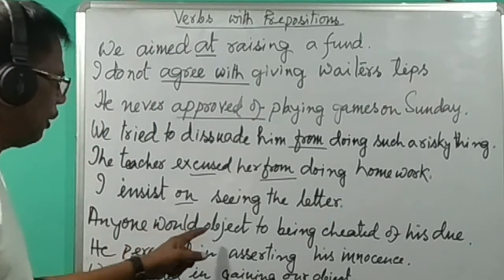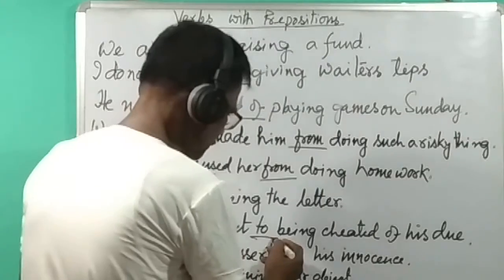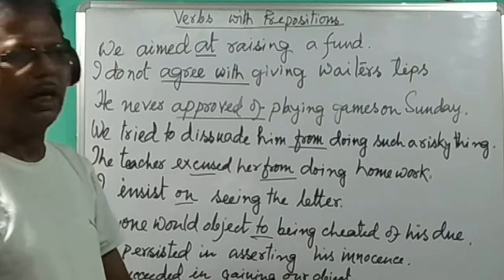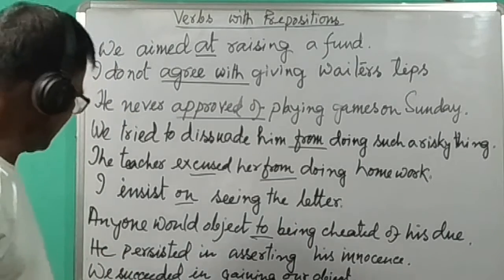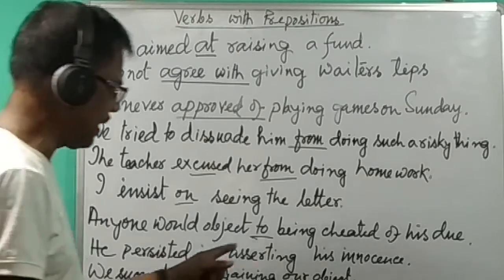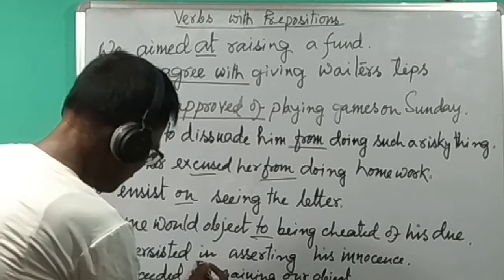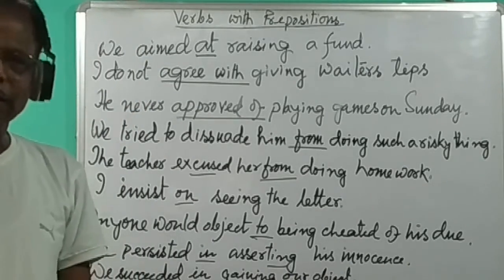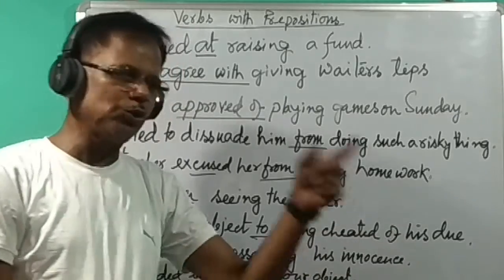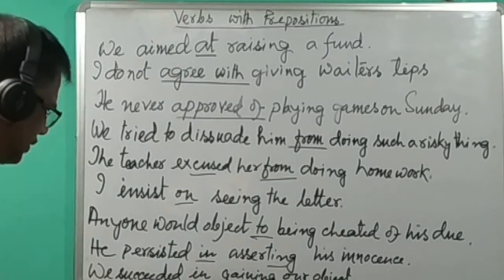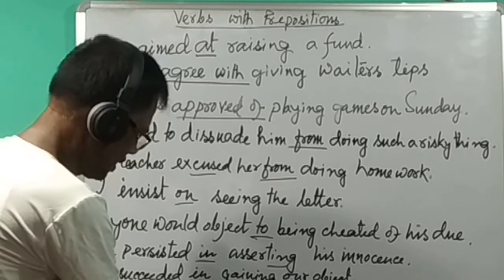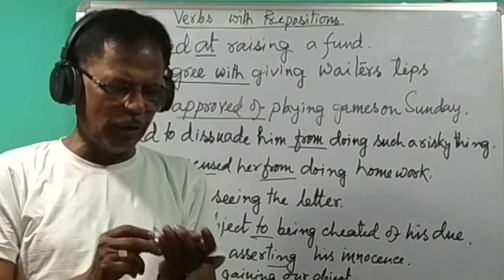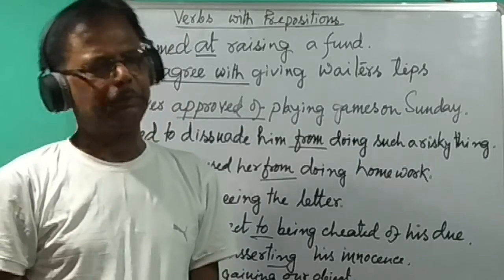Anyone would object to being cheated — 'object' is the verb, 'to' is the preposition, and 'being' is the ING form of the verb. He persisted in asserting his innocence — ING form of the verb. He succeeded in gaining our object — ING form of the verb.